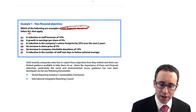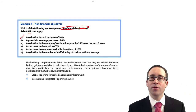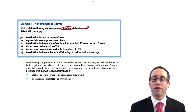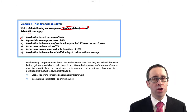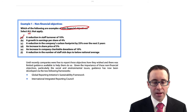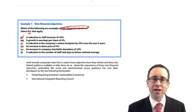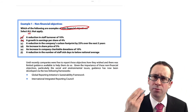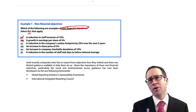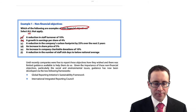The first one: a reduction in staff turnover. That's making sure we try and keep key staff — we don't want them to leave. So that's a non-financial objective; specifically a human objective. Growth in earnings per share — that is a financial objective, similar to the example we saw in the previous chapter where we looked at the compound growth of earnings per share.